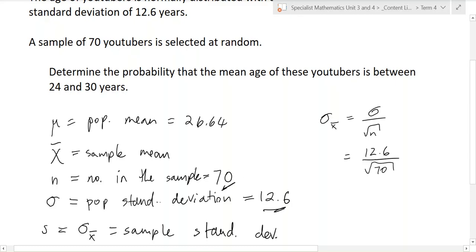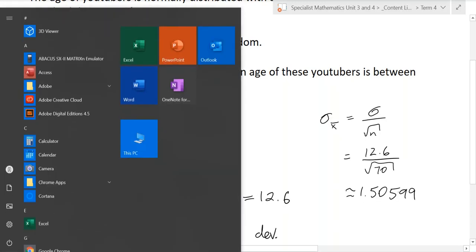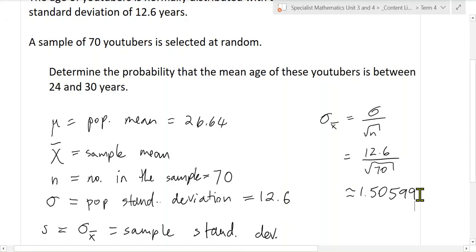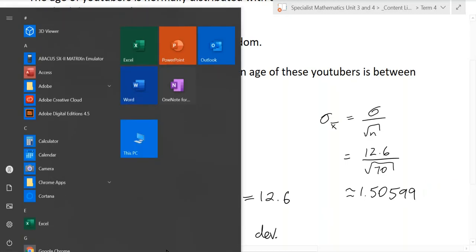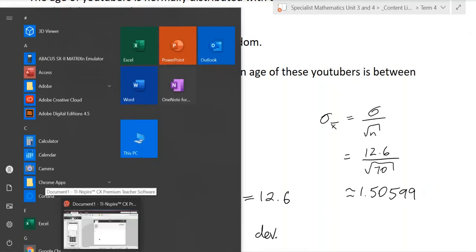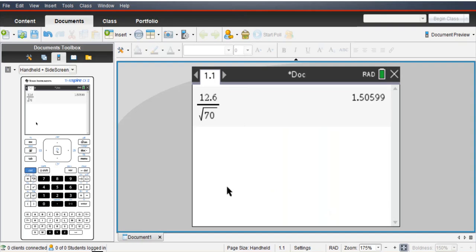So in this it's 12.6 divided by the square root of 70. That is the sample standard deviation. So the spread of the sample is not very big. It's a small number, so the spread is quite small.